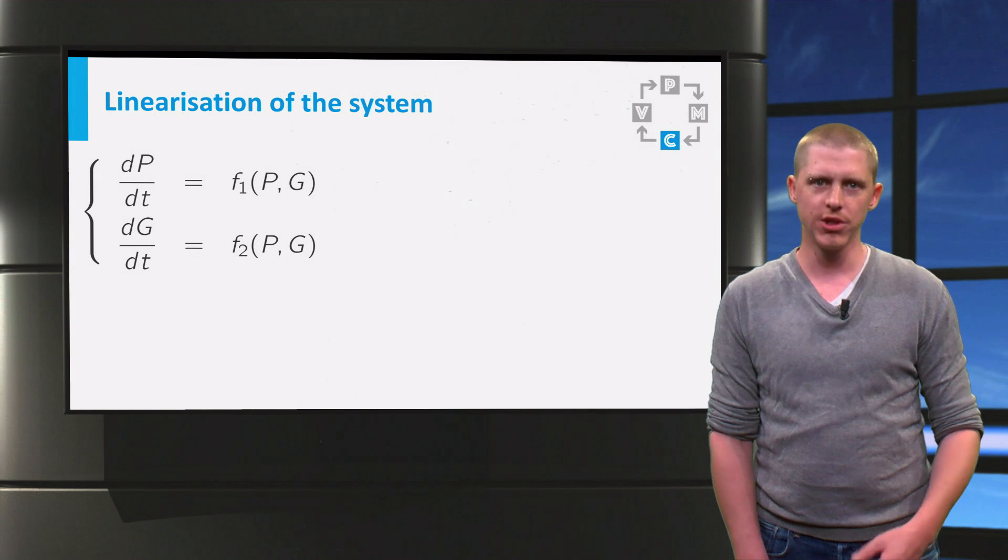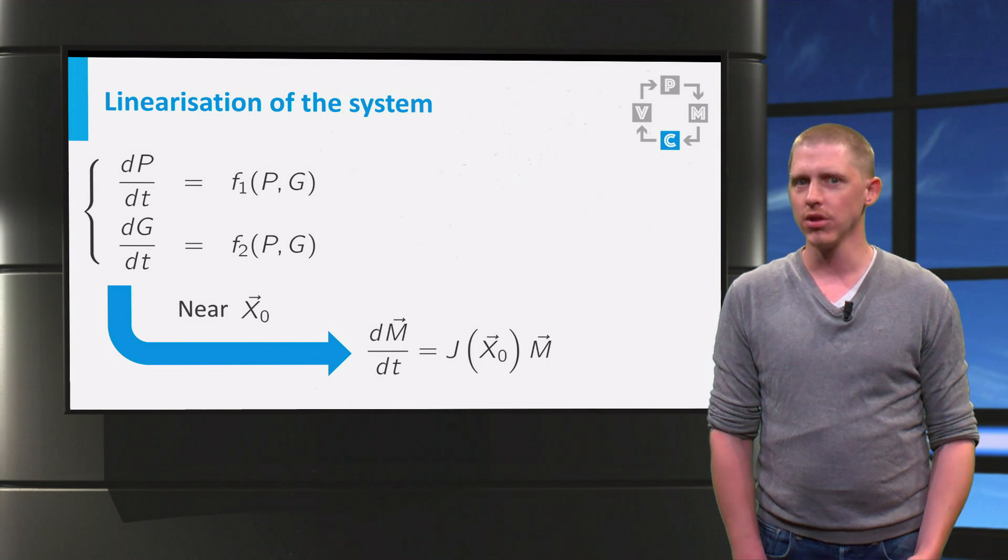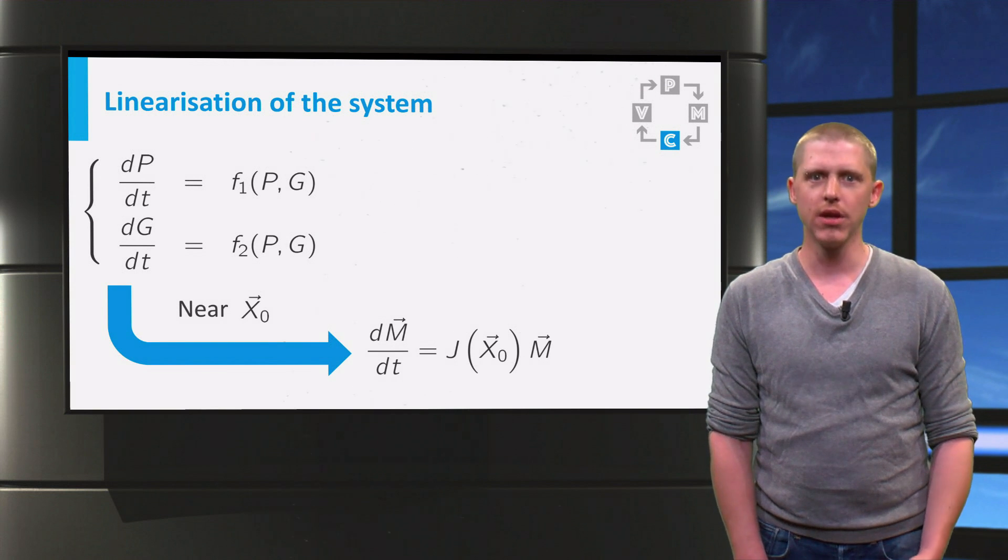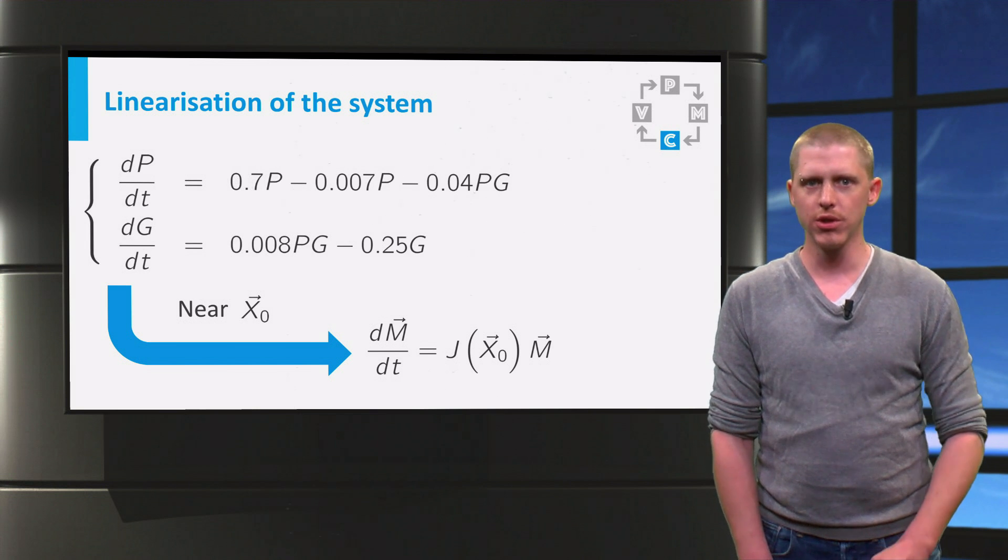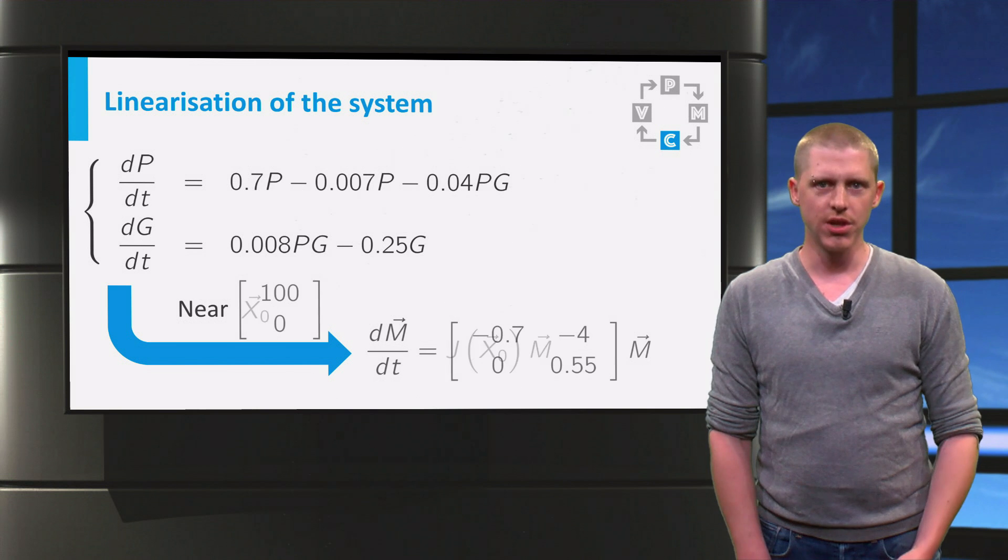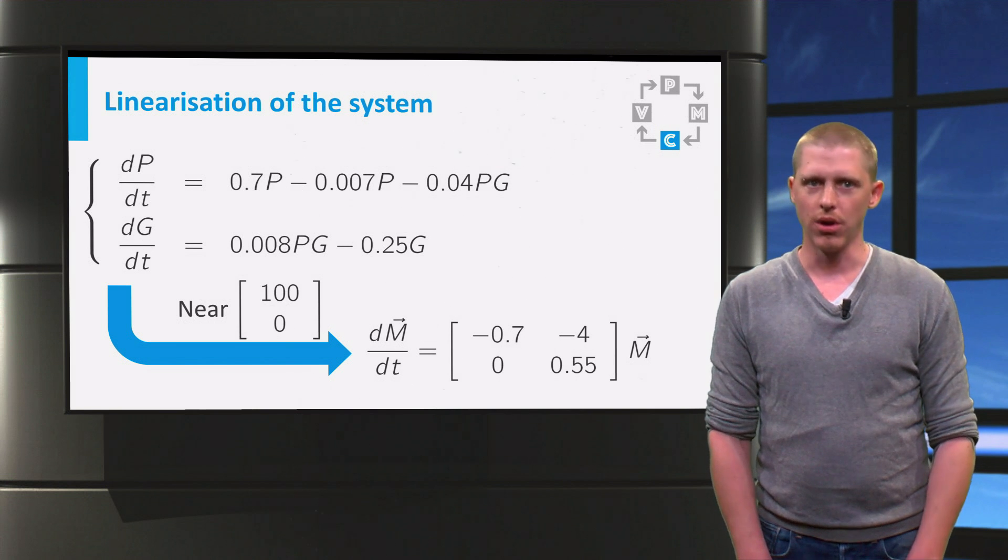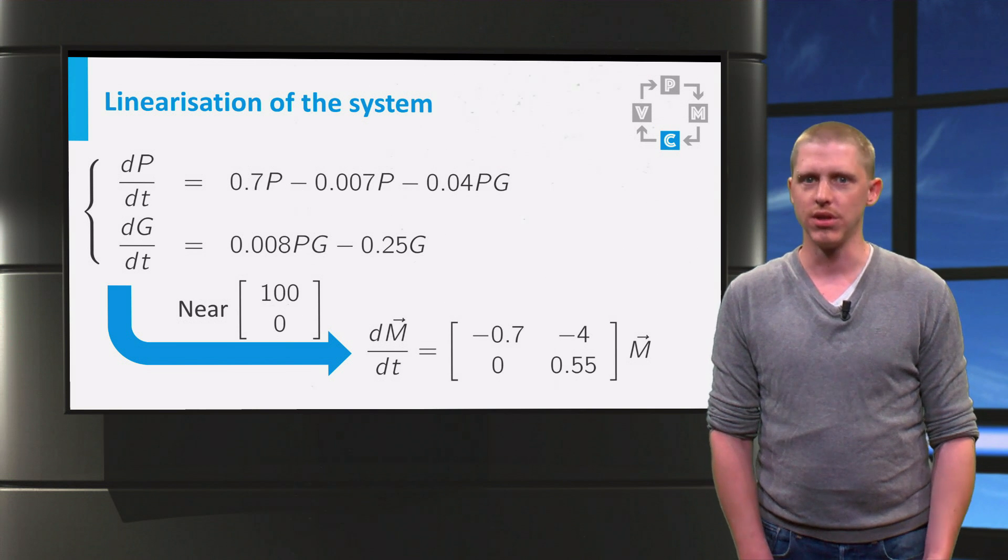For a system of two differential equations, you have learned how to linearize it and write it in a matrix vector form. For our system of differential equations, the linearization around the equilibrium 100-0 resulted in this system.